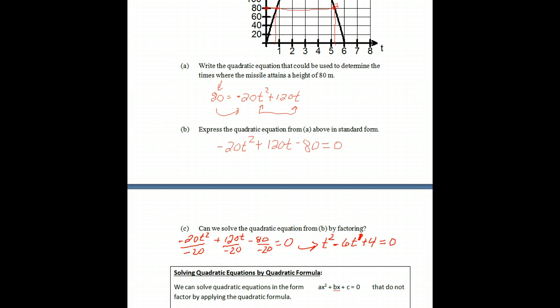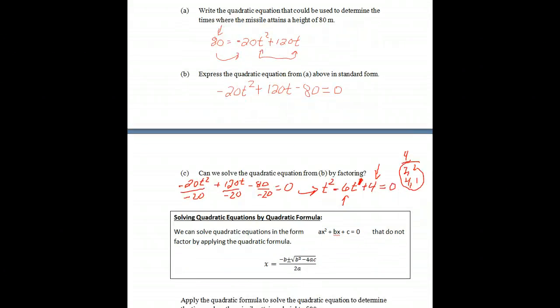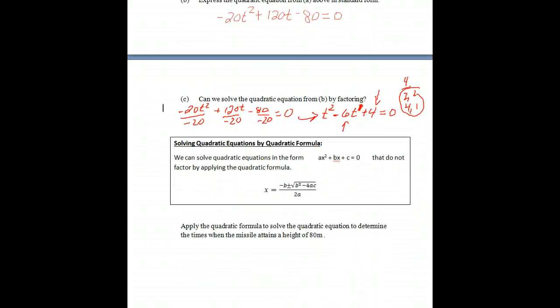And the question asks, can we solve this by factoring? So are there two factors of 4 that can add to give us negative 6? Factors of 4 are 2 and 2, 4 and 1, and no matter which way you add or subtract these numbers, you would never be able to get a negative 6. So this question cannot be factored. So we need another method of solving it.